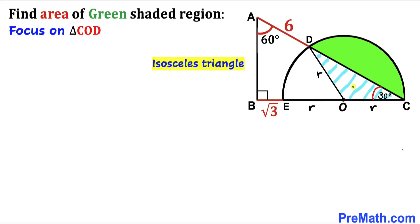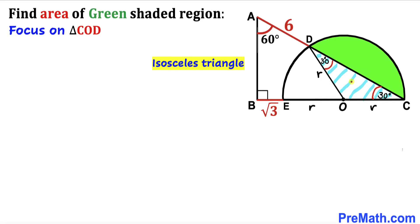Let's focus on triangle COD. We can see this is an isosceles triangle since both side lengths are lowercase R. So therefore if this angle is 30 degrees, then this angle has got to be 30 degrees as well. And we know the sum of angles in a triangle is 180 degrees, so this angle has got to be 120 degrees.